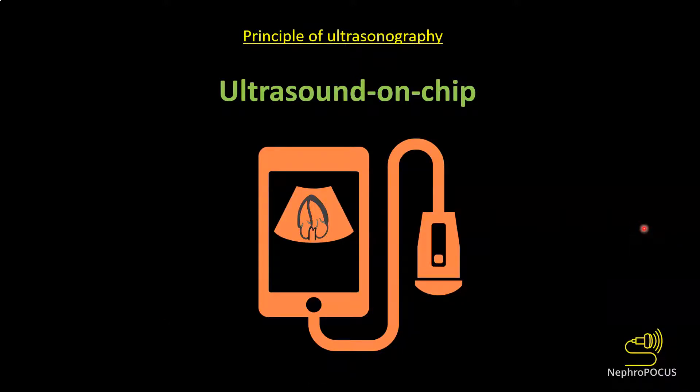Some newer handheld devices use ultrasound-on-chip technology instead of piezoelectric crystals. This technology condenses the properties of different transducers into one device, allowing a single transducer to perform multiple imaging studies. However, the resolution of the images is not as good as piezoelectric probes at this time, though image quality is expected to improve in the future.